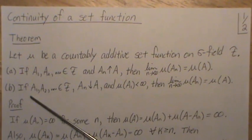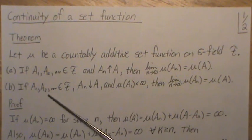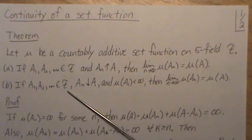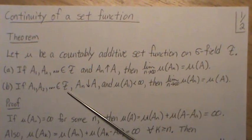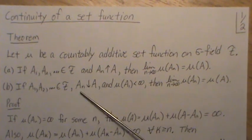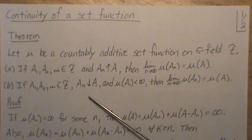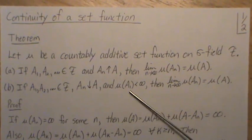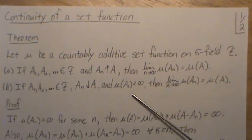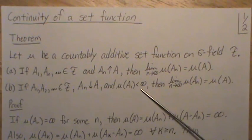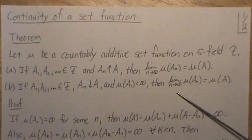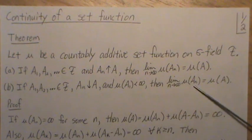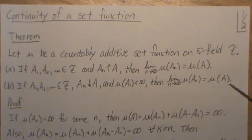In Part B: if sets A1 through A2 all the way to infinity are in the sigma field F, and An are decreasing sets to a limit A, and at least one of them is finite — we'll say A1 is finite — then the limit of the measure of An is equal to the measure of A.